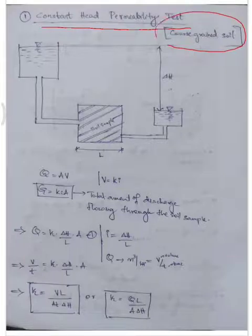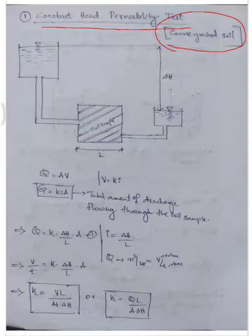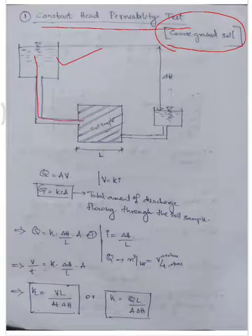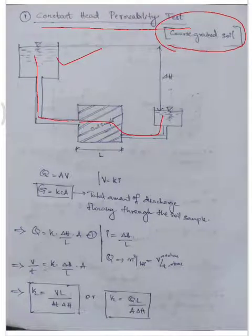In this test setup, you will see a water tank. The head difference remains the same — the constant head difference. Water is admitted into the soil sample, and we measure the net delta H — the head difference. We also need to consider the length of the soil sample.